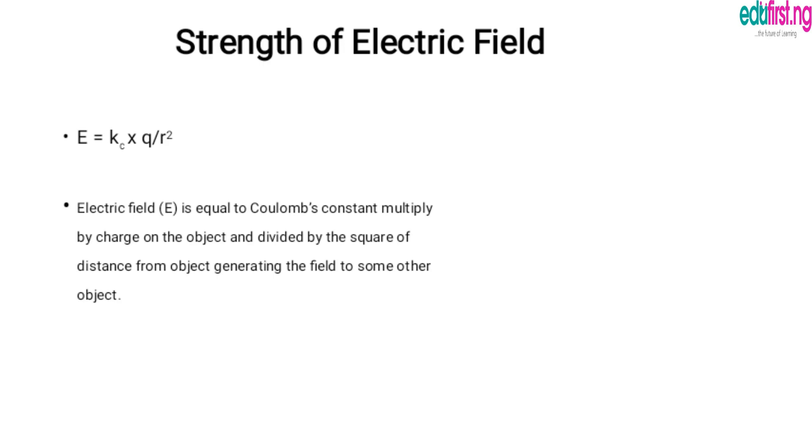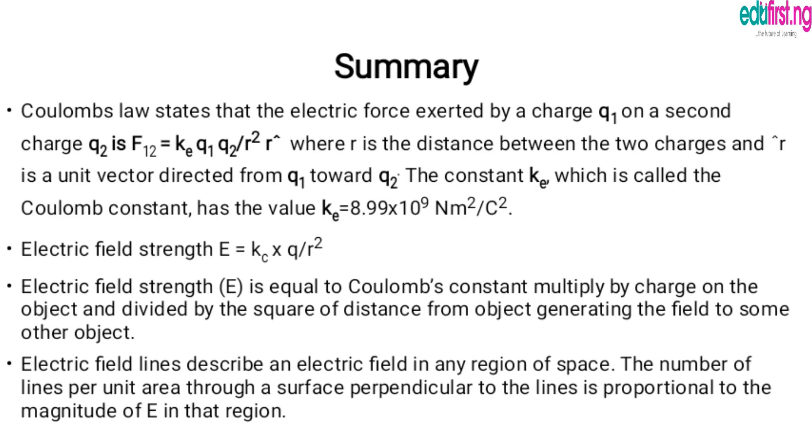The electric field lines for a point charge: for a positive charge, the lines are directed radially outward. To identify a positive electric charge lines, the lines will be drawn from inward and directed radially outward, pointing outside. For a negative point charge, the lines will be directed radially inward. The arrow will be facing inward for a negative charge field line.